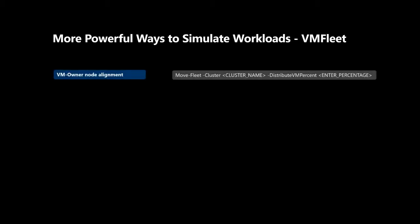We just covered a few diskspd updates. Next I want to cover a few VMFleet updates. The first new feature is the ability to specify a percentage of VMs that can be misaligned from the owner node — in other words, VMs will be rotated to other nodes, denoted by the Move-Fleet command. Previously VMFleet deployed an even number of VMs per node, co-located with the owner node, which would slightly increase performance. In a more realistic scenario, VMs may be slightly misaligned from the owner node, which does affect performance. You can now specify a percentage of VMs to be rotated to be misaligned.